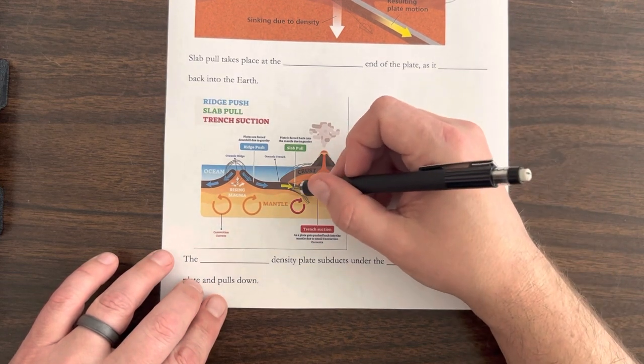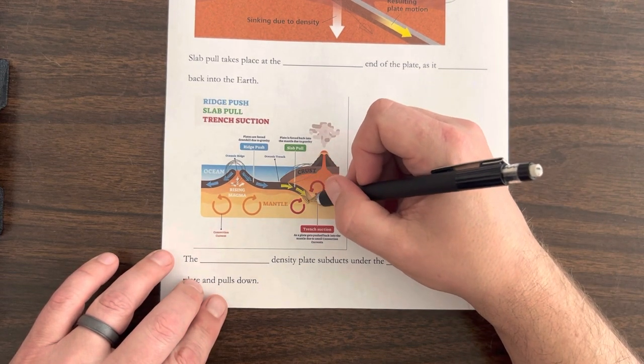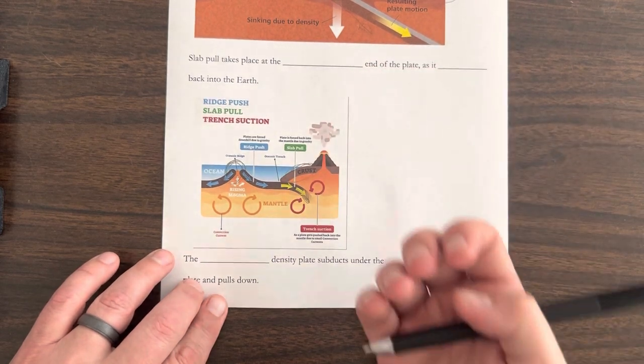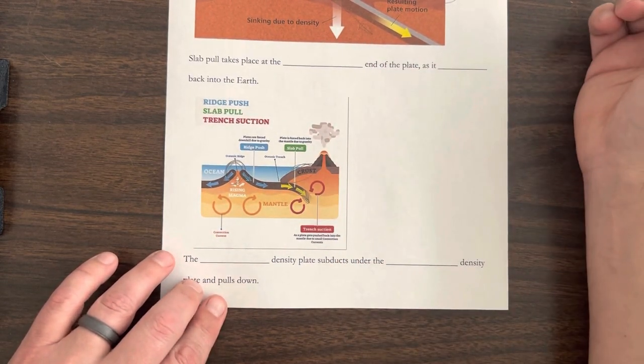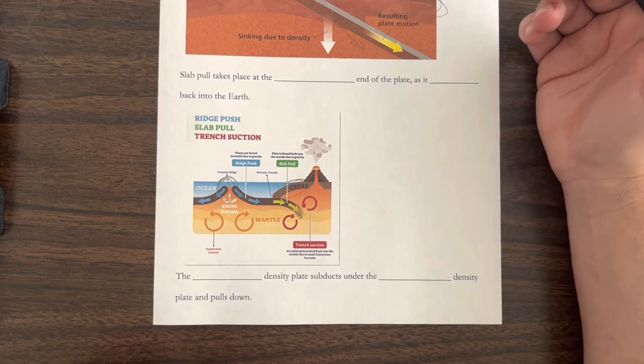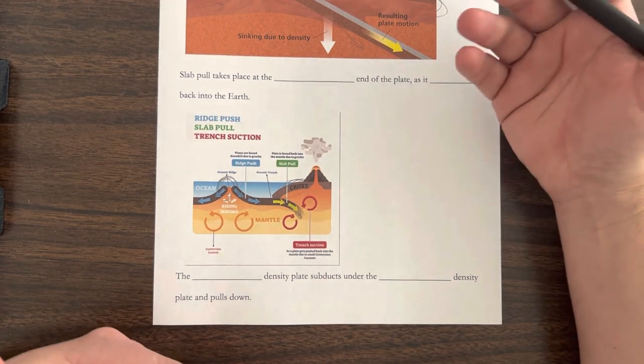And that slab pull pulls it down into the ground as gravity also is pulling it down to the center of the earth. So these are three things that cause this plate motion...